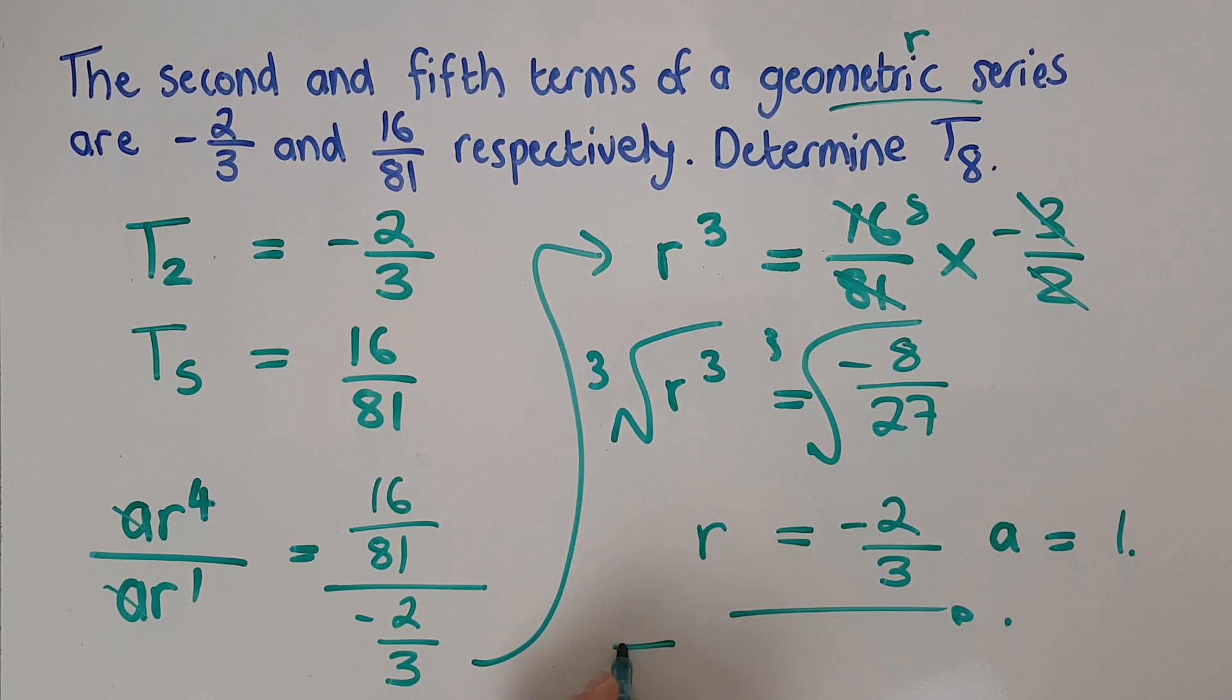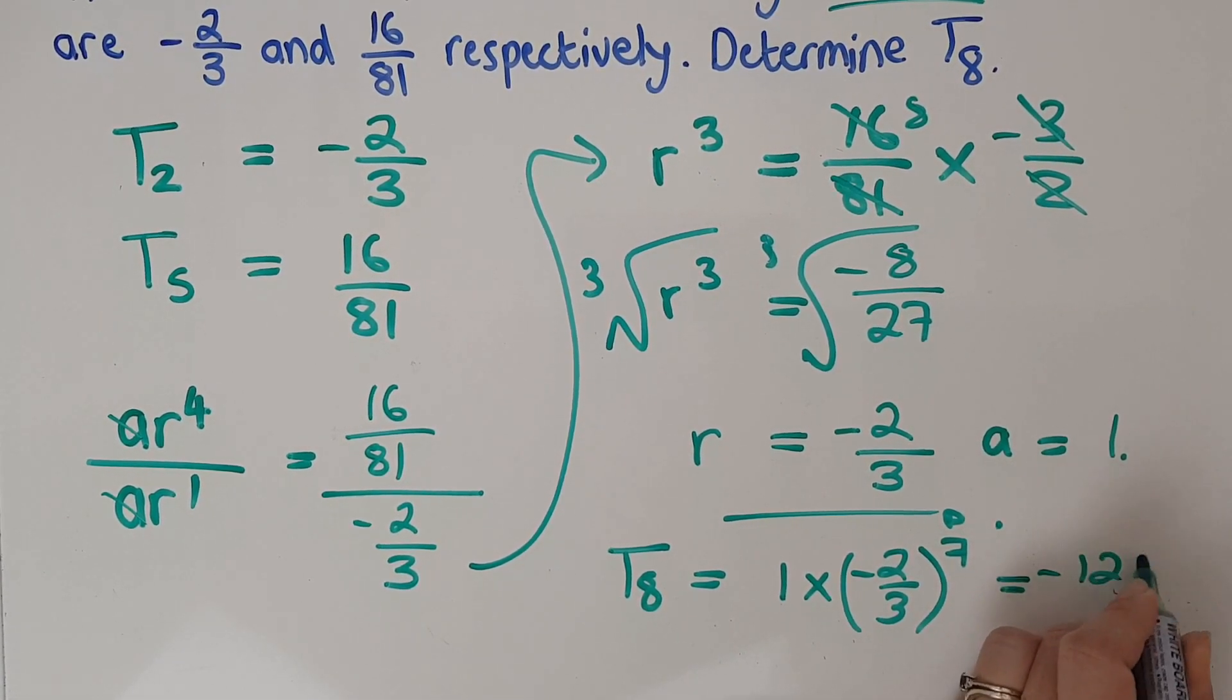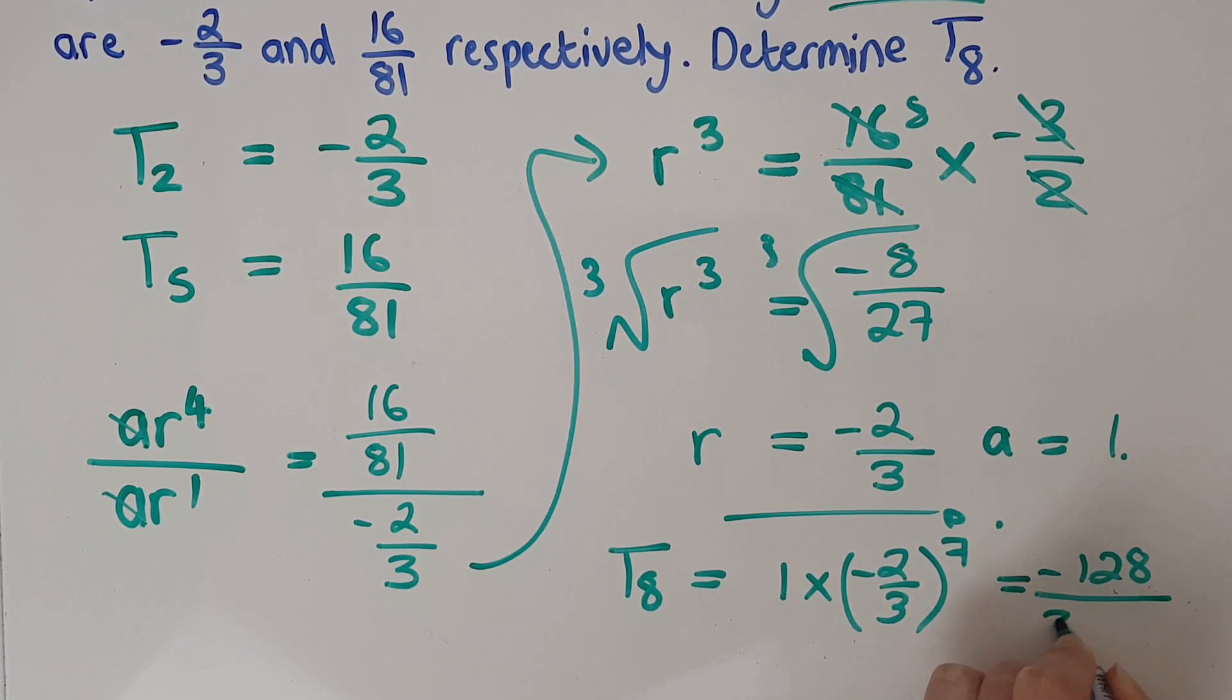So then if I want T8, I'm going to have T8, which is going to be A, which is one, times R, which is my negative two thirds, to the N minus one, which is seven. So plugging this into calculator, I'm going to get out negative 128 over 2187. Awkward number, but that is the answer.